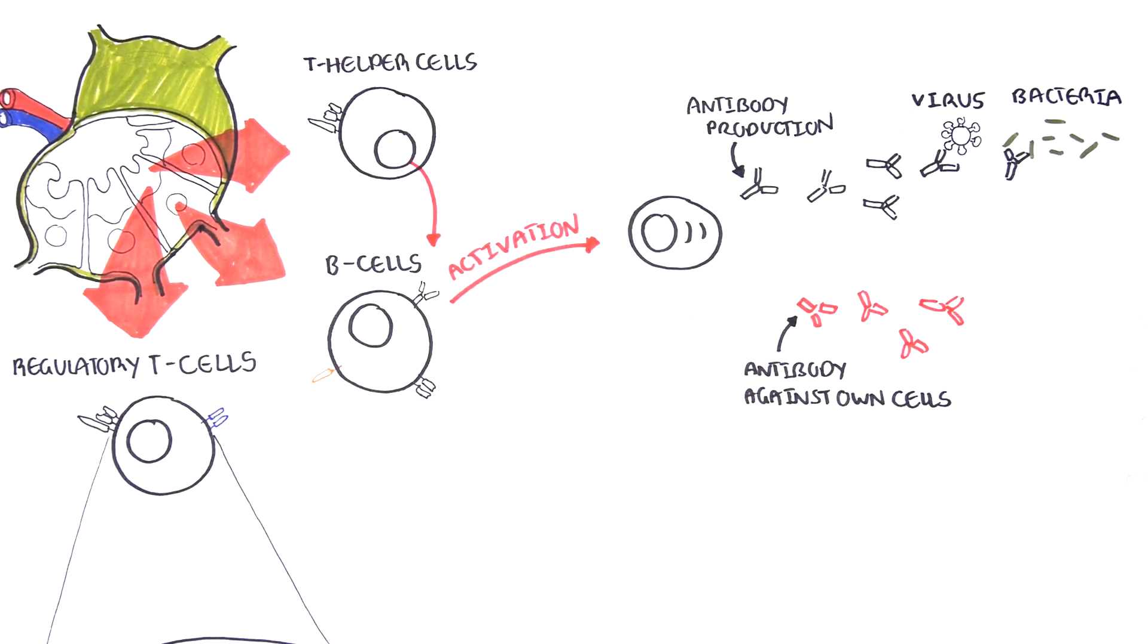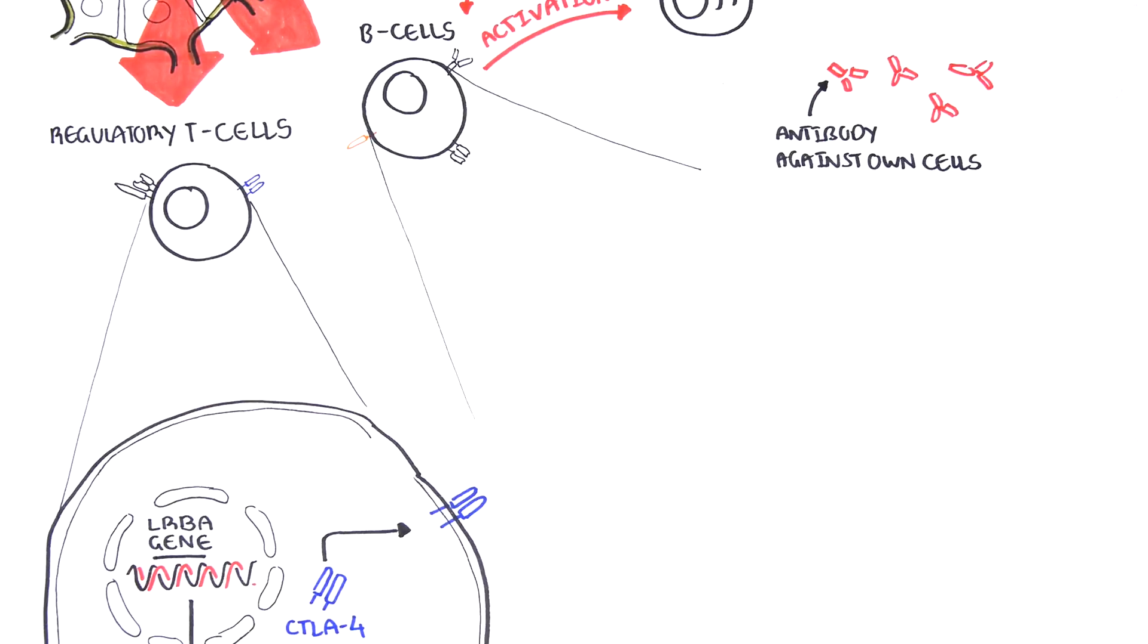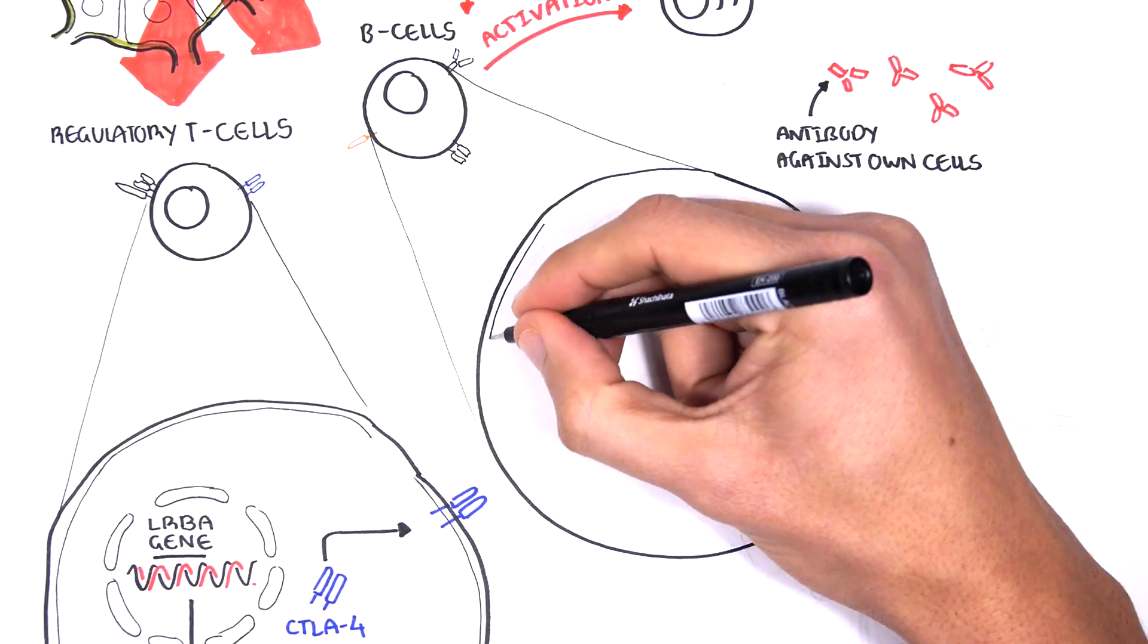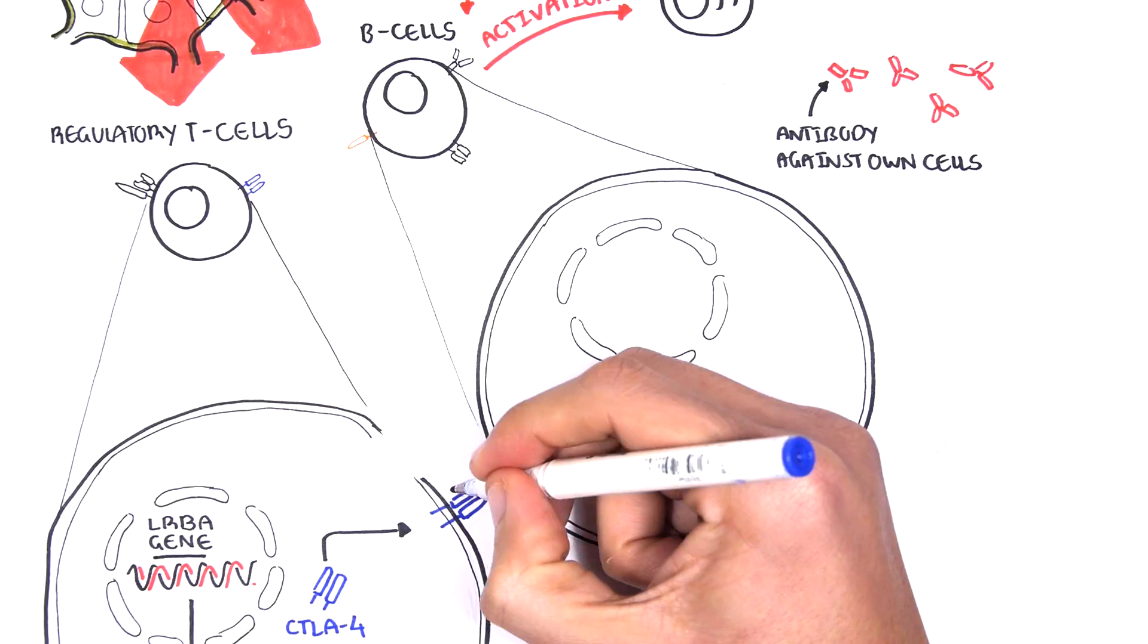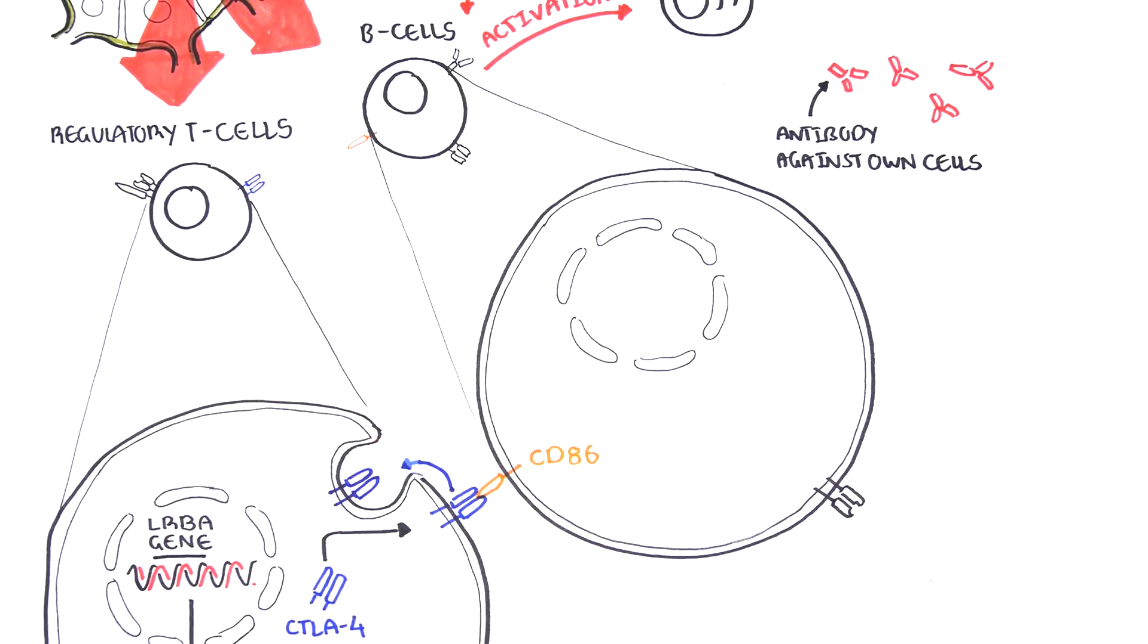And this is where CTLA-4 comes in. When a regulatory T cell bumps into one of these B cells, CTLA-4 gives the B cell a kind of haircut, shaving off a protein called CD86 from the cell's surface, and then engulfing CD86 before breaking it down.